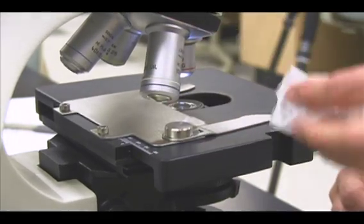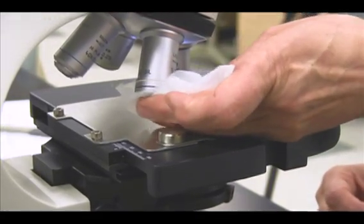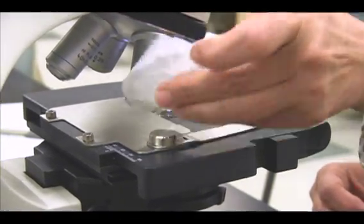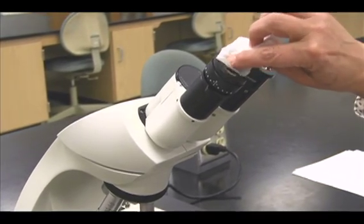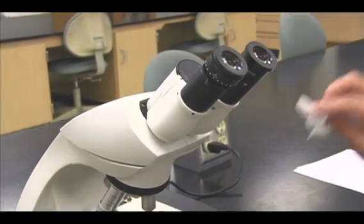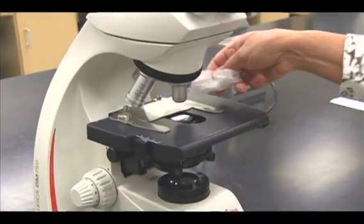Clean all of the oil from the 100x objective with lens paper. Use a clean sheet of lens paper to clean the rest of the lenses on your microscope.